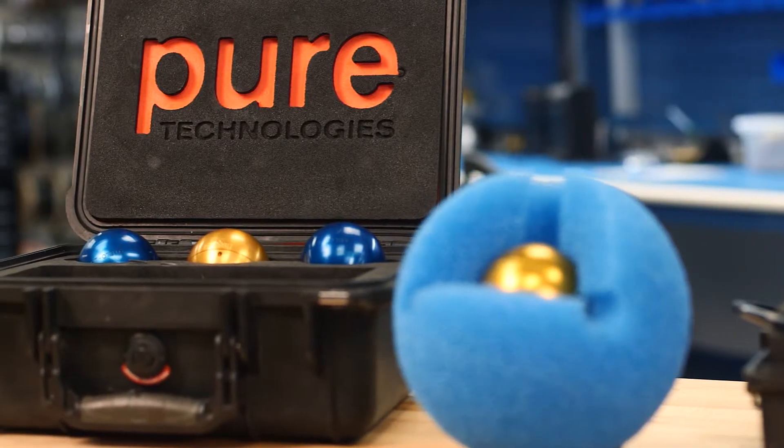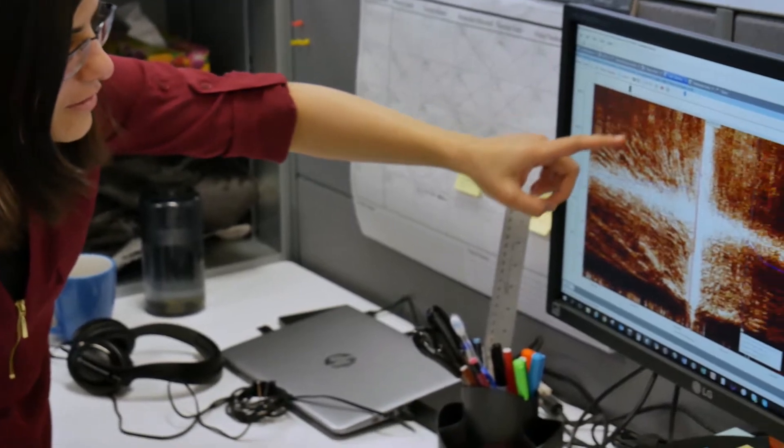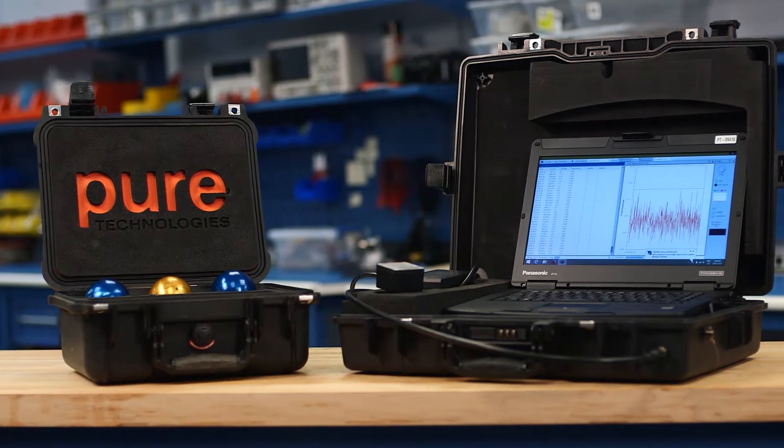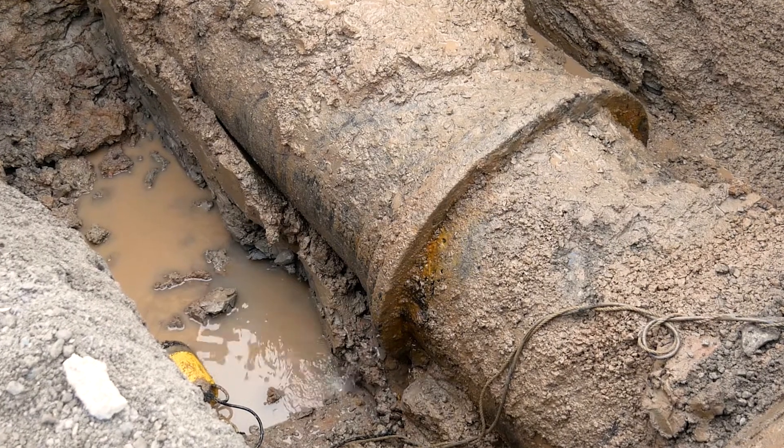In fact, based on thousands of miles of experience, we're finding three to four times more leaks than trunk main correlators, which means SmartBall is a really great tool when you want to find all the leaks and reduce your non-revenue water.